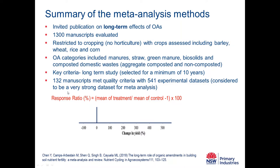A meta-analysis uses a fairly simple equation. You have a response ratio and a control — the control is always considered zero. Here you can see the dotted line showing a 120% increase in yield as an example. That is basically how I'm going to be presenting the data around the various aspects of the organic amendments.